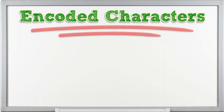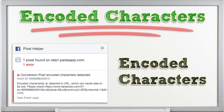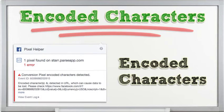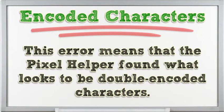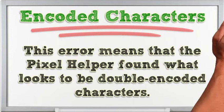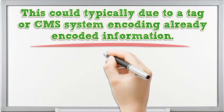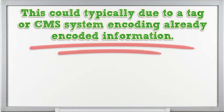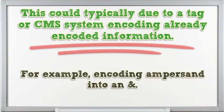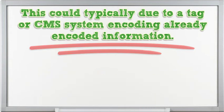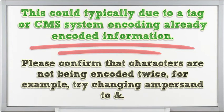Encoded Characters: this error means that the Pixel Helper found what looks to be double-encoded characters. This could typically be due to a tag or CMS system encoding already-encoded information — for example, encoding an ampersand into '&amp;'. Please confirm that characters are not being encoded twice; for example, try changing '&amp;' back to '&'.